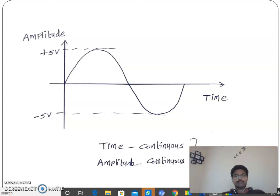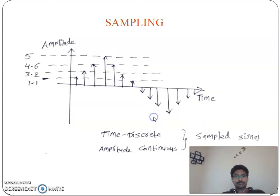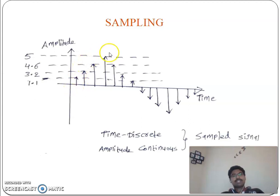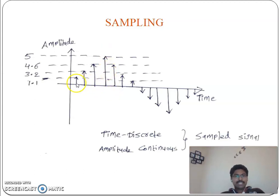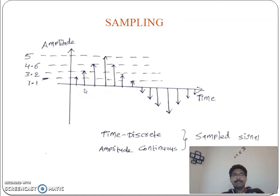Now coming to sampled signals. Sampling means we take a sample of the sinusoidal signal at certain time intervals — say at t = 1 second, then t = 2 seconds, then t = 3 seconds. In between these two time intervals, say between 1 second and 2 seconds, we are not taking any sample. We are discretizing the time — taking only discrete time values.